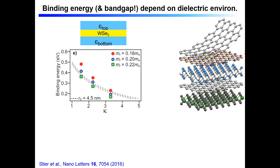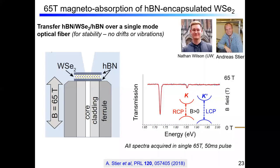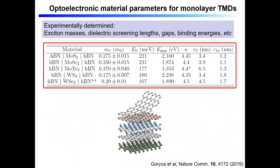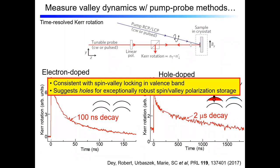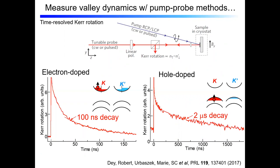Question: when doing valley lifetime measurements, did you see any trends going from molybdenum to tungsten compounds or from lighter to heavier chalcogen atoms? We've only studied tungsten diselenide, because that is the material where we could gate it for both electron and hole type. For something like MoS2 we have a very hard time gating it into the hole regime — it's a material quality issue.